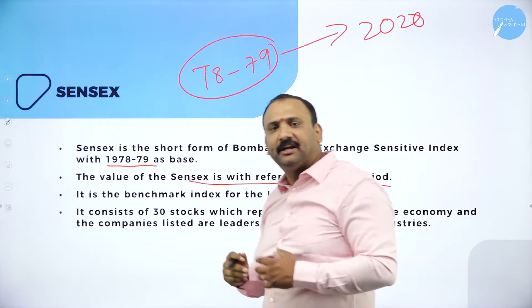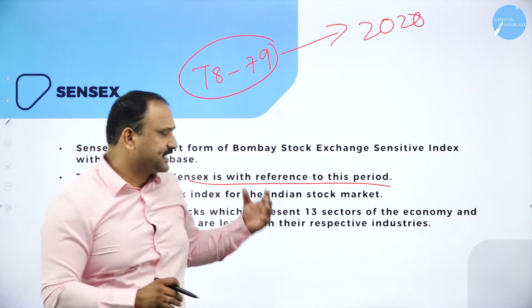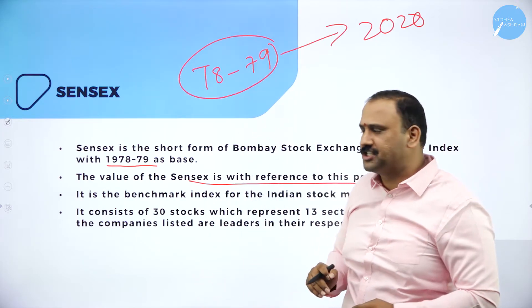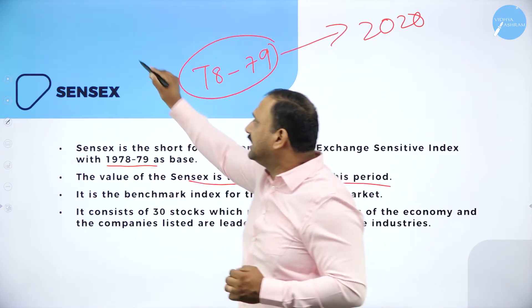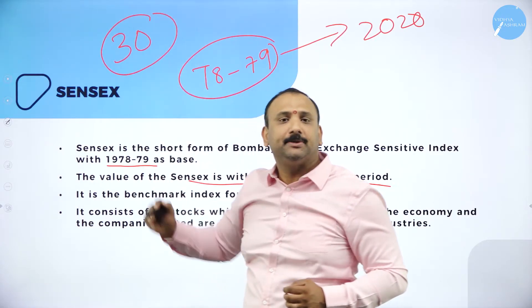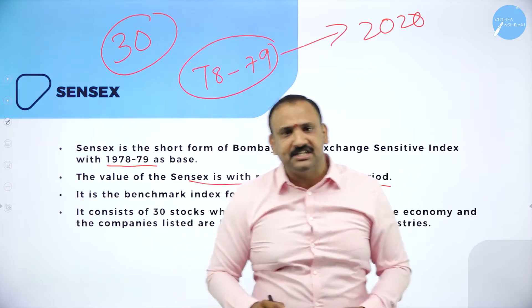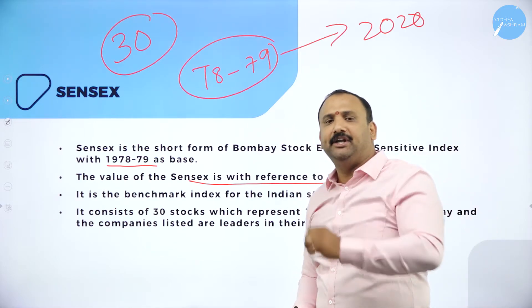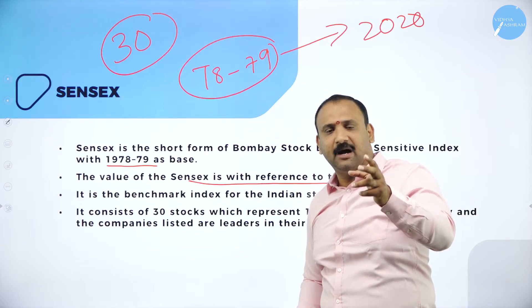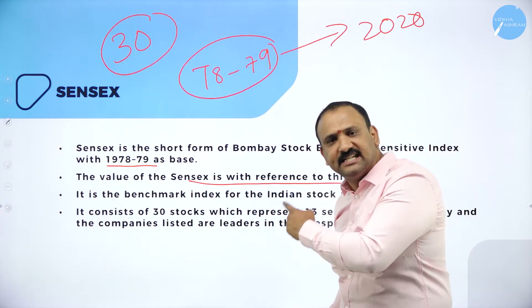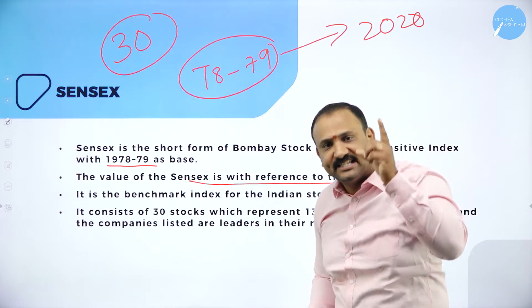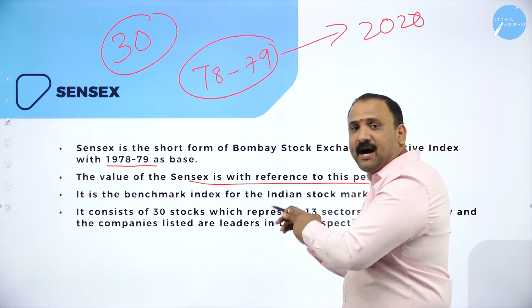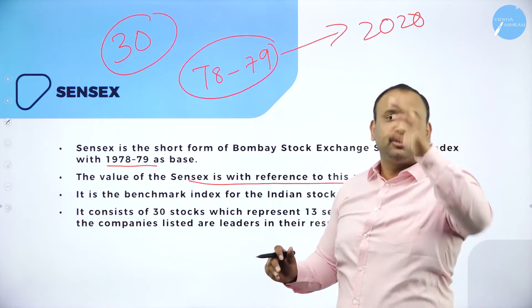Starting from 1978-79 as the base year, we keep comparing it up to today — about 2020 — so about a 41-year index. The Sensex is primarily about the stock market that happens in our country, specifically the Bombay Stock Exchange. The Bombay Stock Exchange has 30 stocks which govern the Sensex — 30 top blue chip companies which perform on a daily basis. Any minute changes, any factors that really affect these 30 companies will be immediately reflected on the Sensex. The Sensex is a sensitivity index — it senses minute changes, minute frictions, and fractions that happen together in the market.